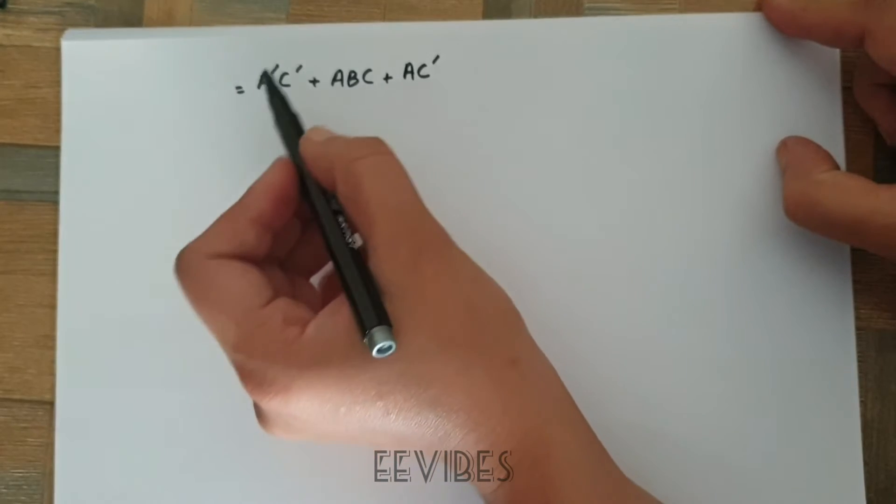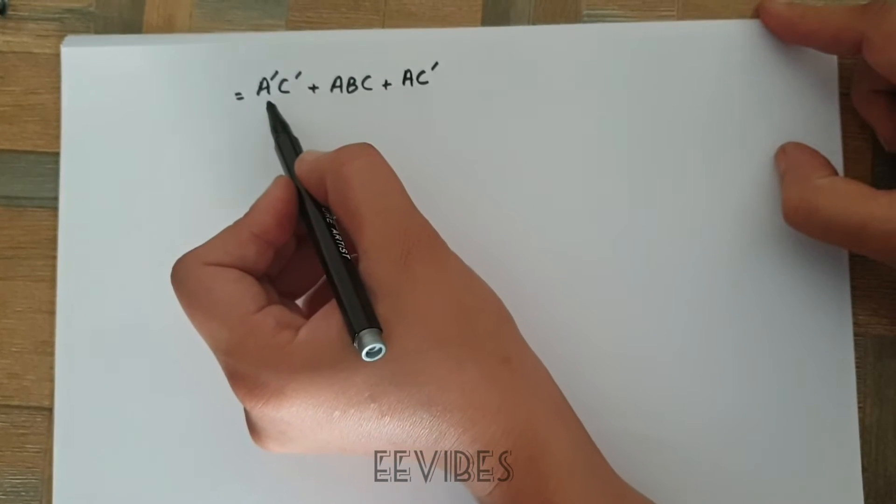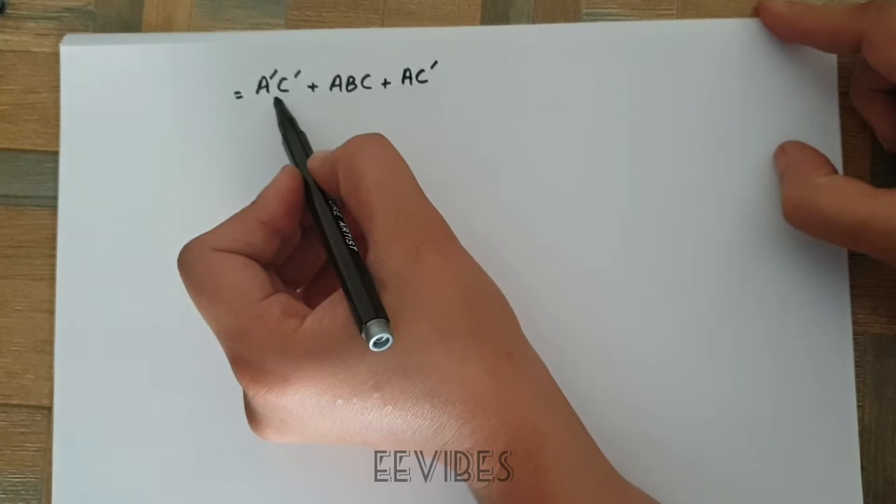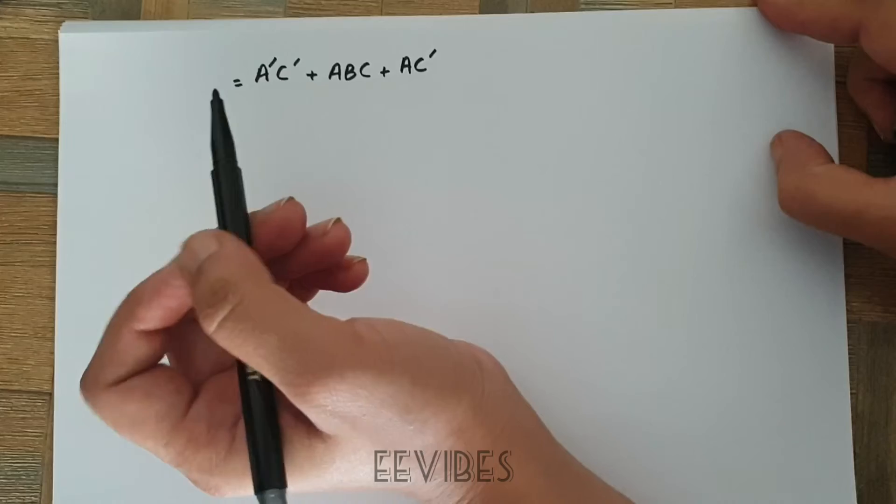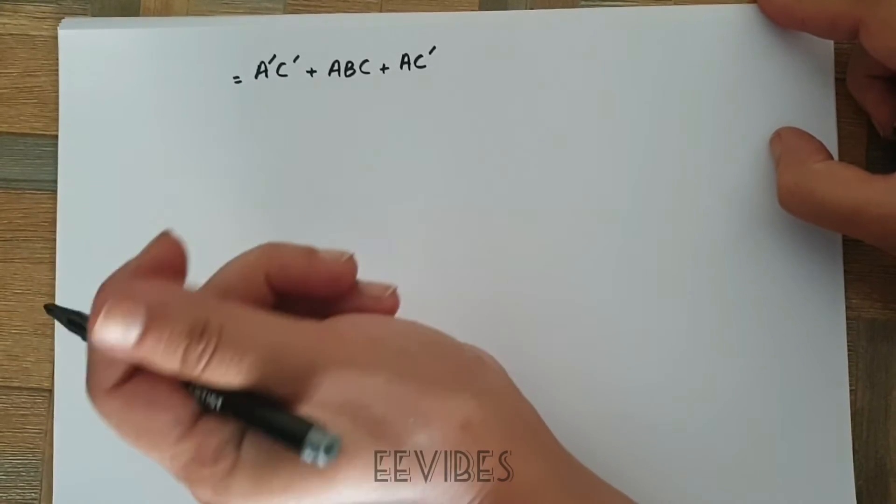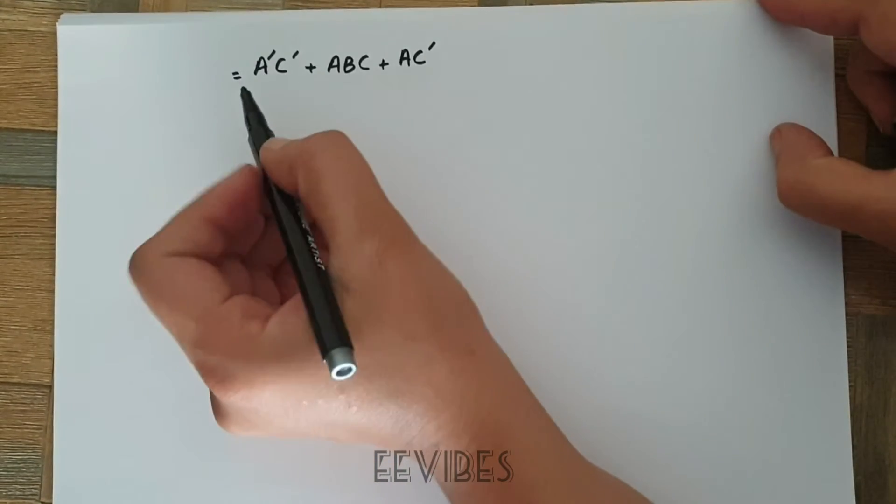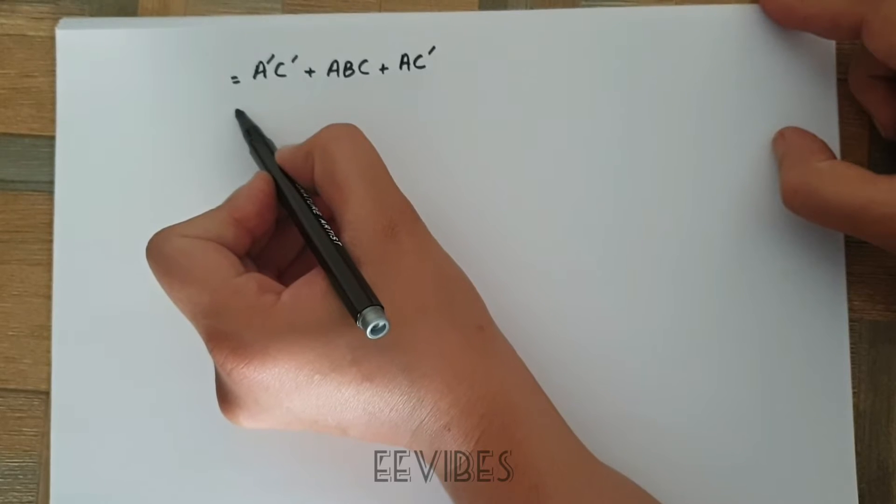Now what is the meaning of simplifying the expression up to 3 literals? It means the final expression should contain only three variables that can be in the prime or unprime form. So let's start doing this.